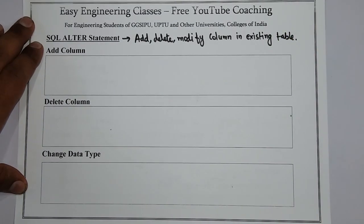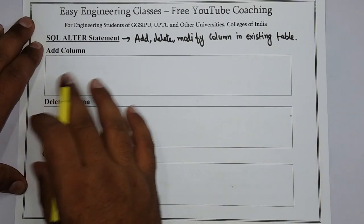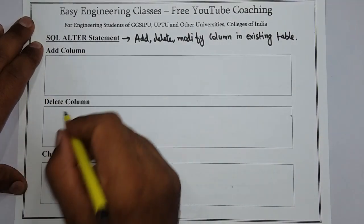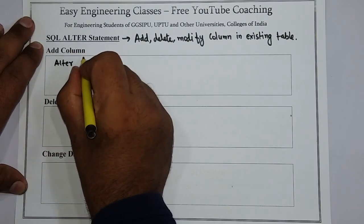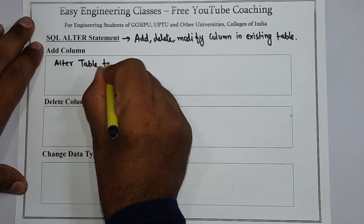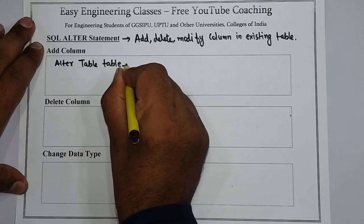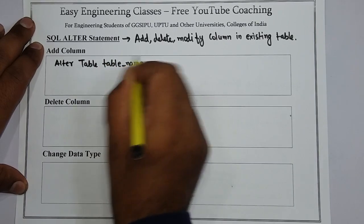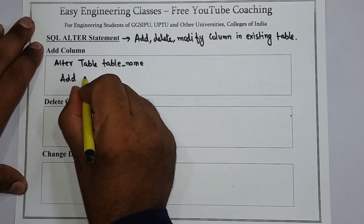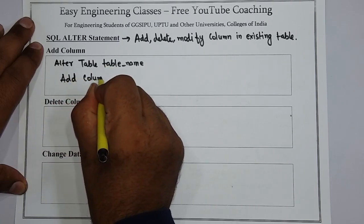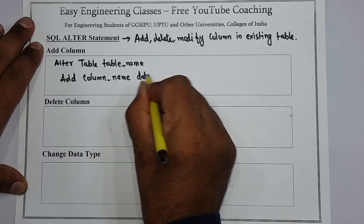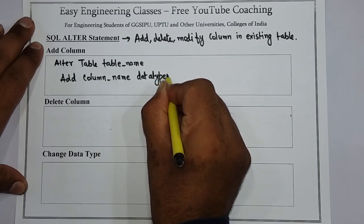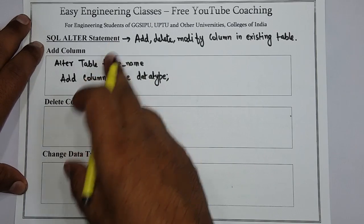First we will see how we can add a column in a table using the ALTER statement. The syntax is: ALTER TABLE, table name, ADD column name, and the data type. This is the syntax for adding a column.